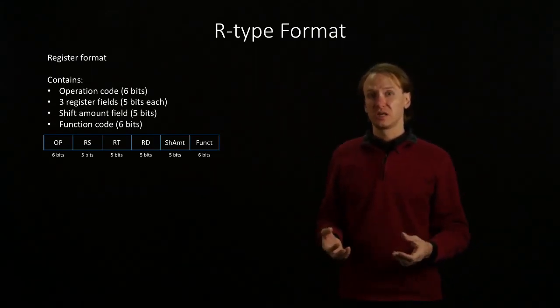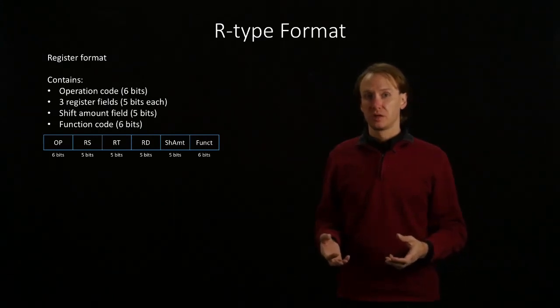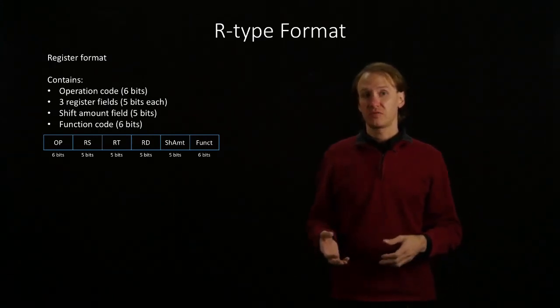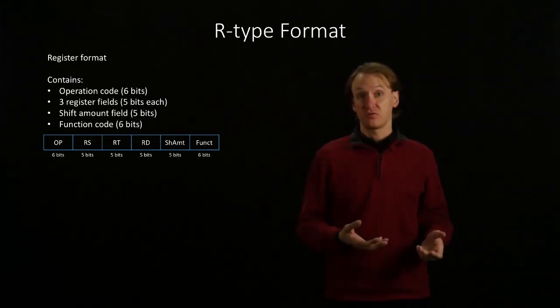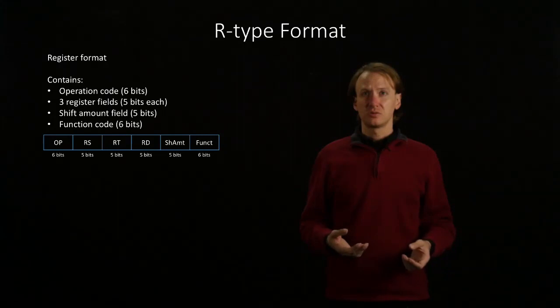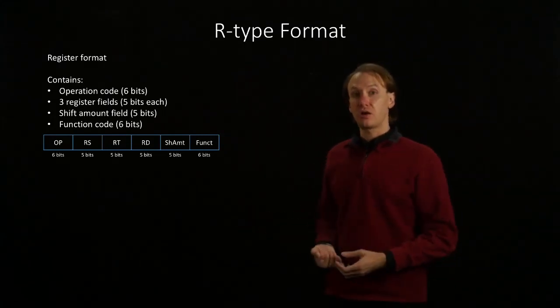For the other two types, it's pretty obvious when you need them. We'll only use the J-Type format for jump instructions. We'll only use the immediate type instructions for operations that require an immediate. So, everything else can pretty much be an R-Type instruction.